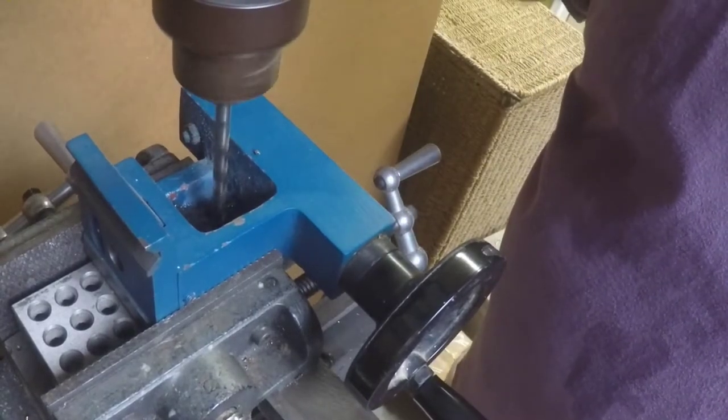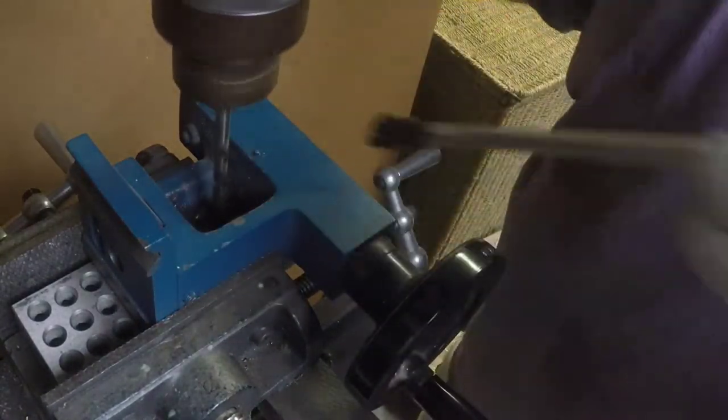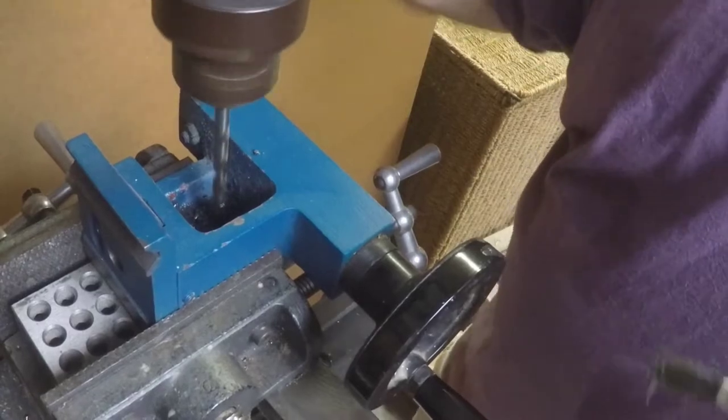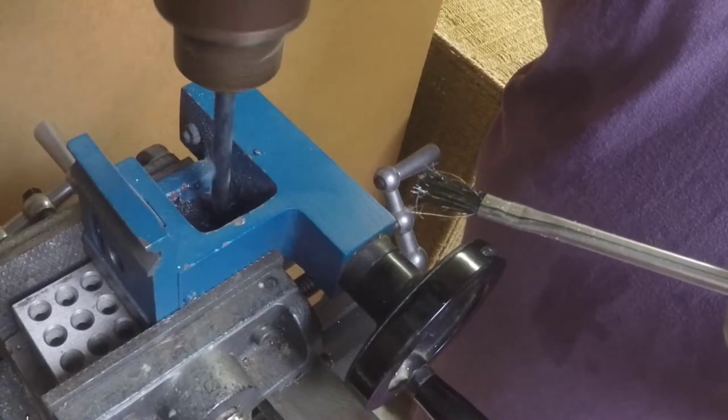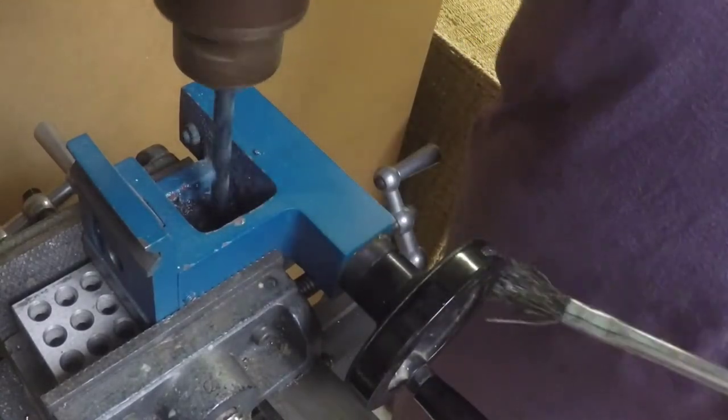I'm going up in steps a little under one eighth of an inch. The cast iron seems pretty soft so I guess I could have skipped a couple of sizes. But doing it in small steps just doesn't seem to add that much time. So why not?